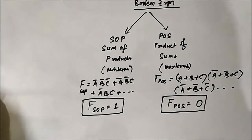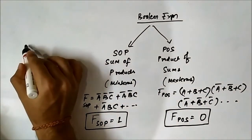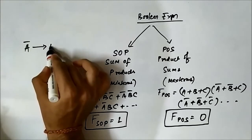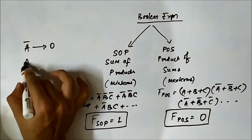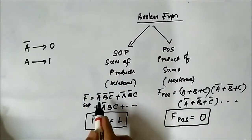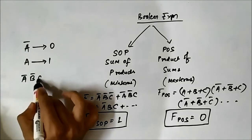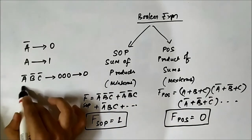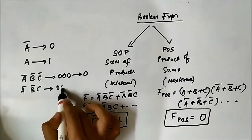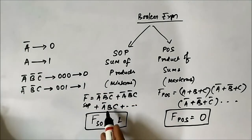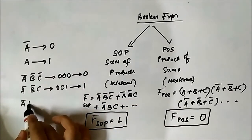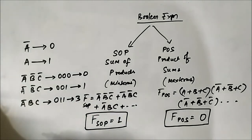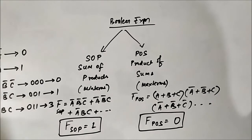Another important thing: in SOP, the variable which is complemented — which has a bar sign above it — always stands for 0, and the uncomplemented variable always stands for 1. For example, A bar B bar C bar is actually 0, 0, 0 — which is 0. Similarly, A bar B bar C is 0, 0, 1 — which is 1. And A bar B C bar would be 3, like this.